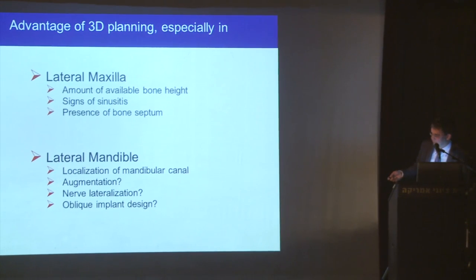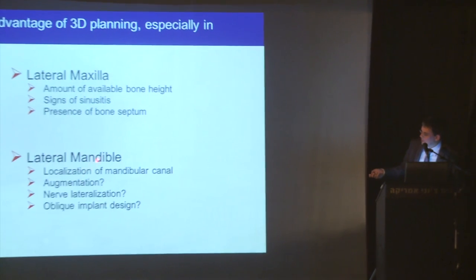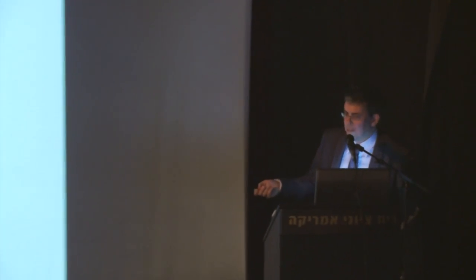In the lateral mandible, the first question is: where is the nerve? Depending on the level of the nerve relative to your available bone and the occlusal plane you want to reach, you often need a solution — augmentation, nerve lateralization, profile implants with an oblique surface from companies like Dentsply or Astra to avoid lateral augmentation, or short implants which are becoming more and more popular.